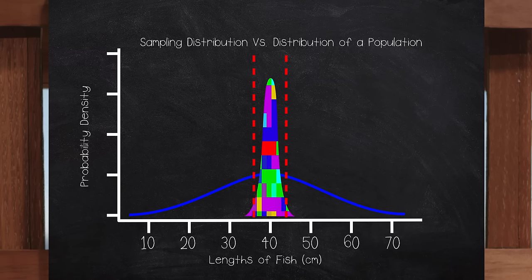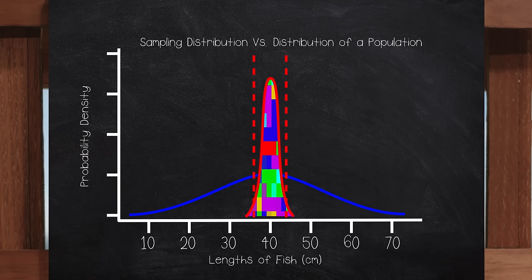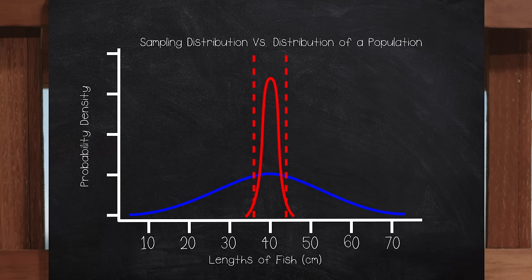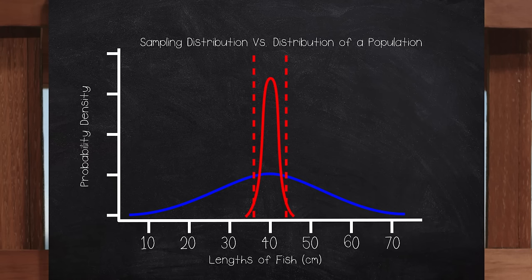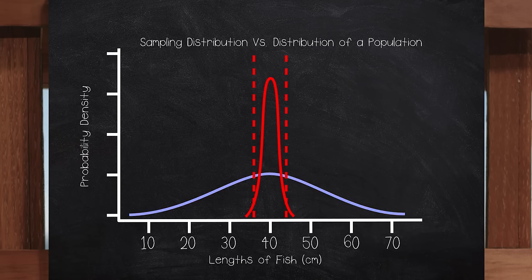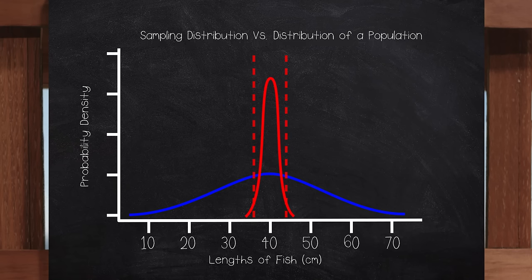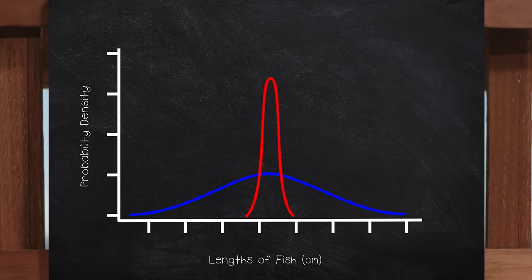Now, check this out. The sampling distribution, the distribution of all the possible means we could get, is approximately normal or bell-shaped. Okay, so we think of the sample mean that we're going to get as one of many possible sample means we could get. And we can think of pulling it out of this distribution here. Even if, this here, the population of all individual fish lengths is not normally distributed.